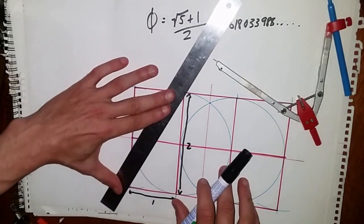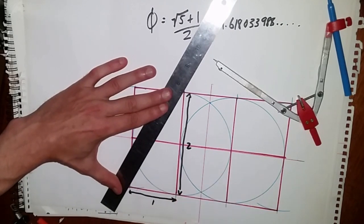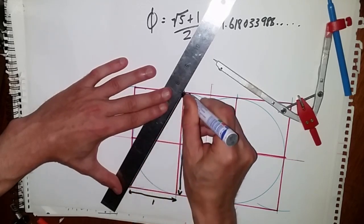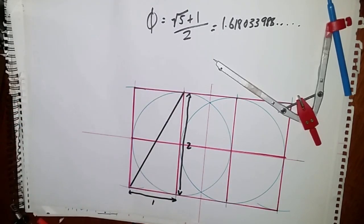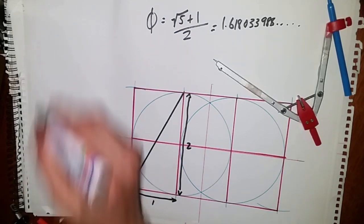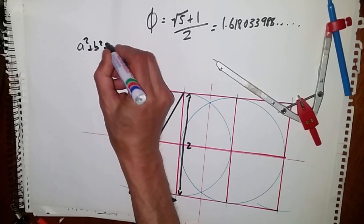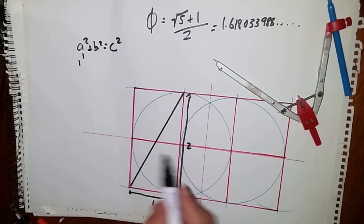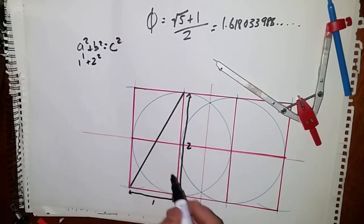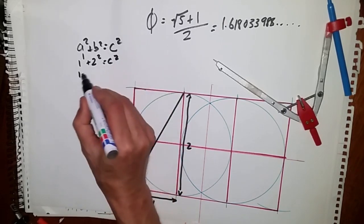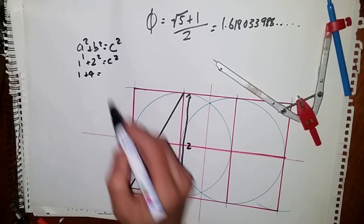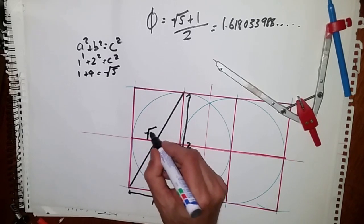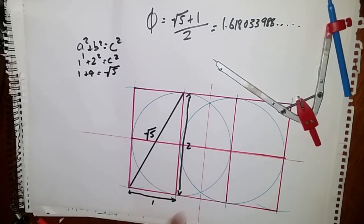If we do a diagonal, we now have this 2 to 1 right-angle triangle. Pythagorean theorem: A squared plus B squared equals C squared. A is 1 squared, B is 2 squared equals C squared. That's 1 plus 4 equals — well, the square root of that — 1 plus 4 is 5. So therefore this diagonal is the square root of 5. We already have 1.